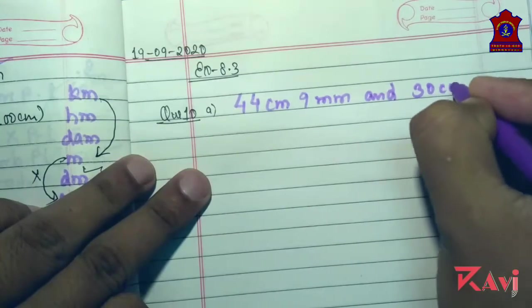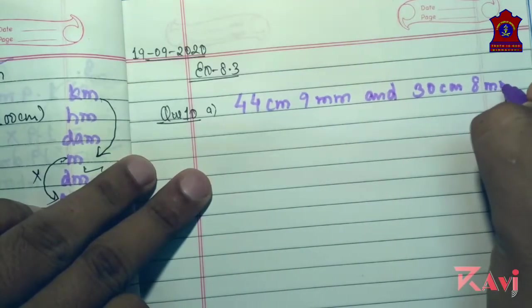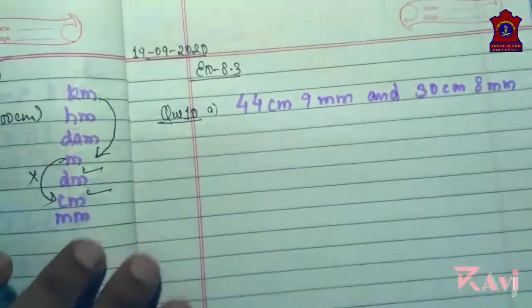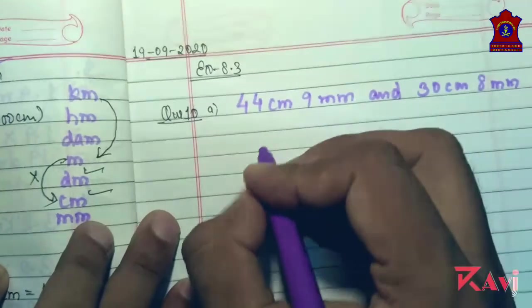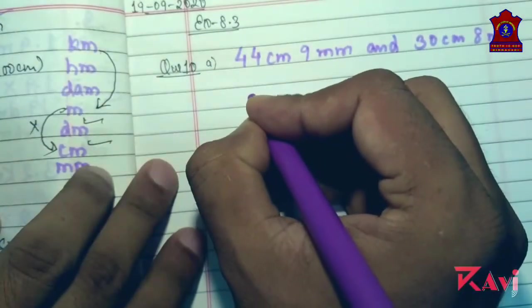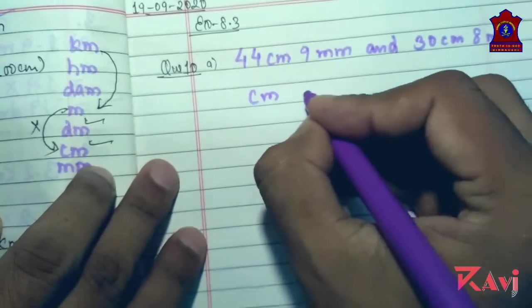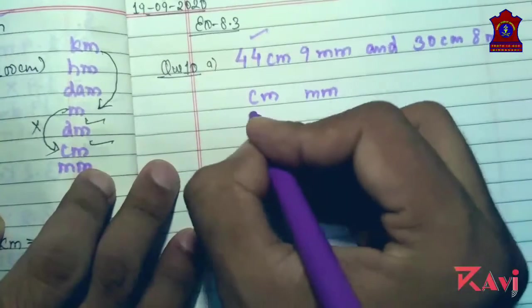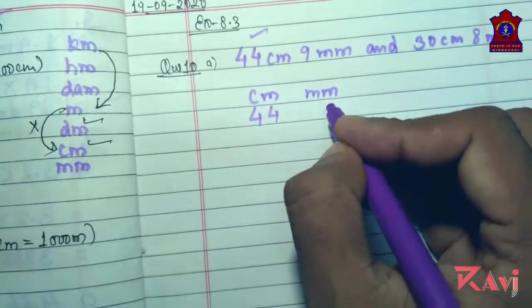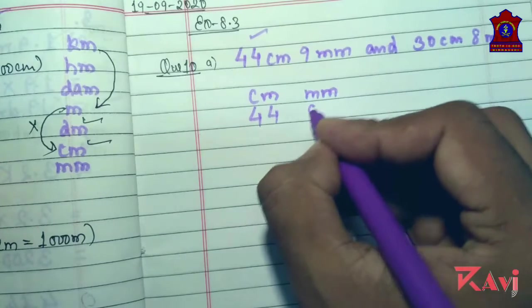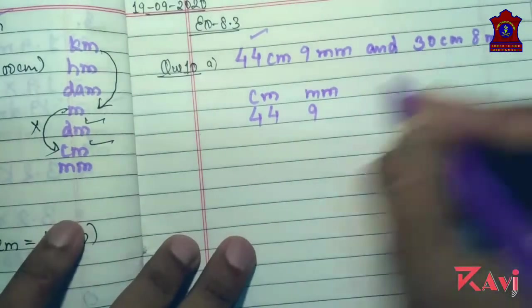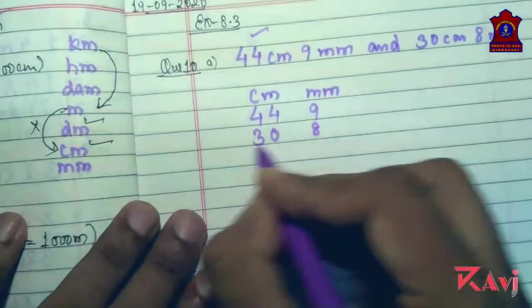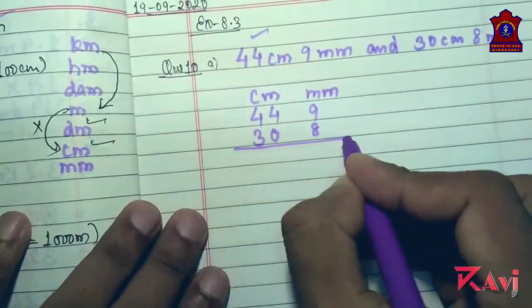First arrange this in column. We can create centimeter and millimeter columns. Write this 44 and this 9, 30 and this 8.